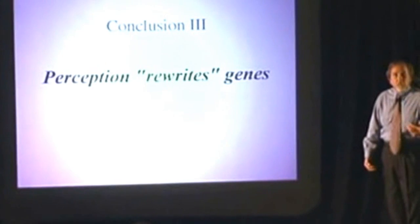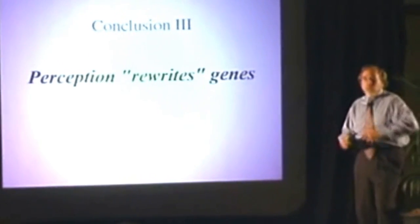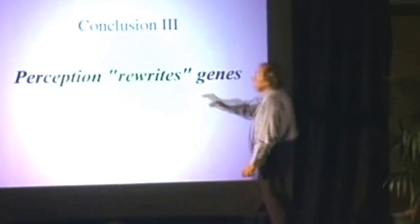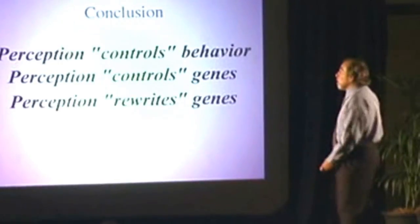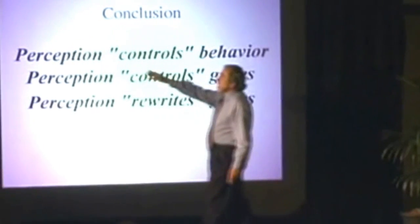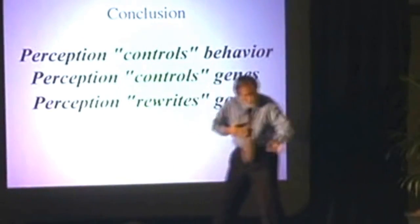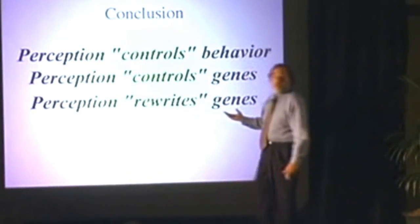So our third conclusion is not only does the perception activate behavior, not only does the perception activate the genes, but when necessary, perception rewrites genes. So what's the conclusion? Are you genetically controlled? Are you at the behest of your heredity? Are you a victim? Absolutely not. Why? Because by adjusting your perception, you can adjust your behavior. By adjusting your perception, you can select different genes in your function. By adjusting your perception, you can rewrite your genes.